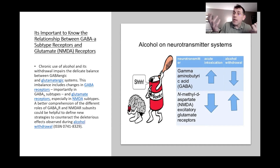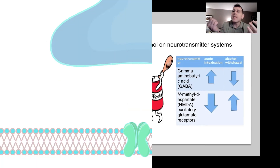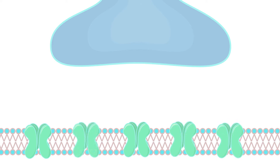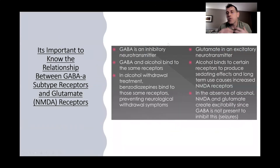On the flip side are the NMDA receptors, which are responsible for giving us excitation. So if we're constantly drinking and depressing our mood, what the body's going to want to do is increase the number of NMDA receptors so that we can be more excited and stay awake.